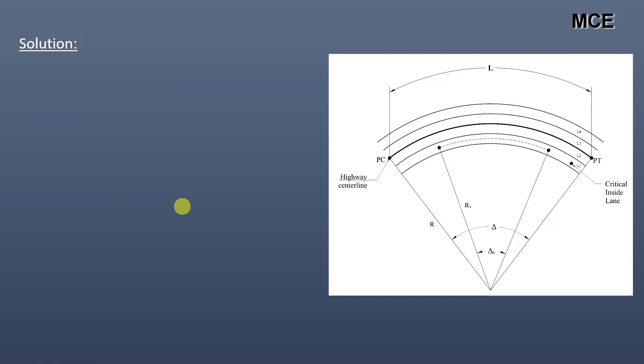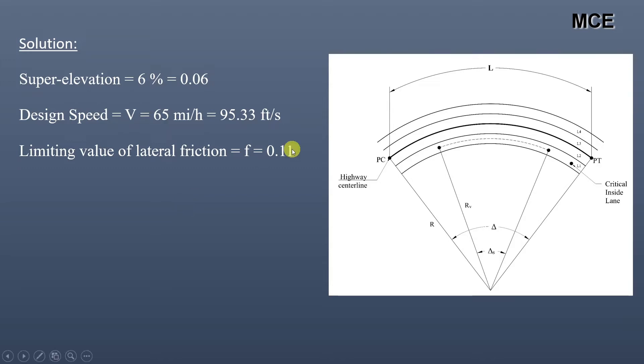First, we'll see what is given. Super-elevation e = 6% or 0.06. Design speed = 65 mph or 95.33 ft/s. The limiting value of lateral friction f for super-elevation of 6% and design speed of 65 mph equals 0.11.